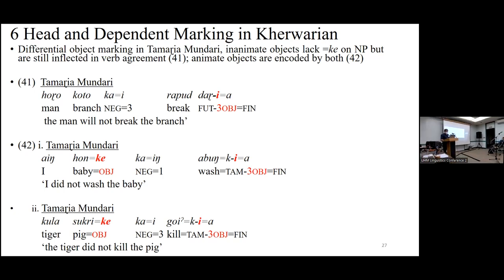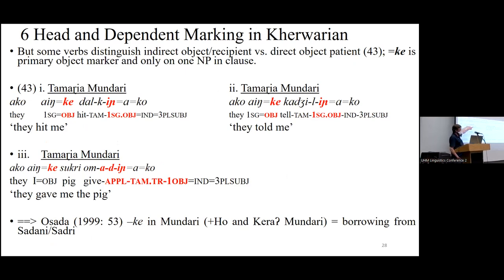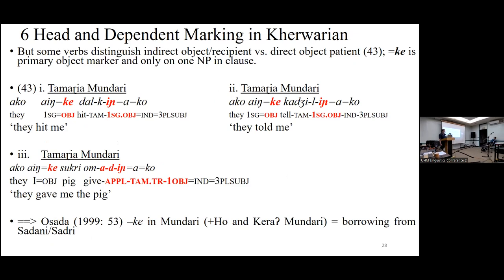This is what the lesson learned today is — these languages are complicated. We also find a distinction in the head-marking system between direct and indirect objects, while the dependent marking system doesn't differentiate them. So 'they hit me' has no applicative, whereas 'gave to me' is distinguished in the head-marking system, but not in the dependent marking system.